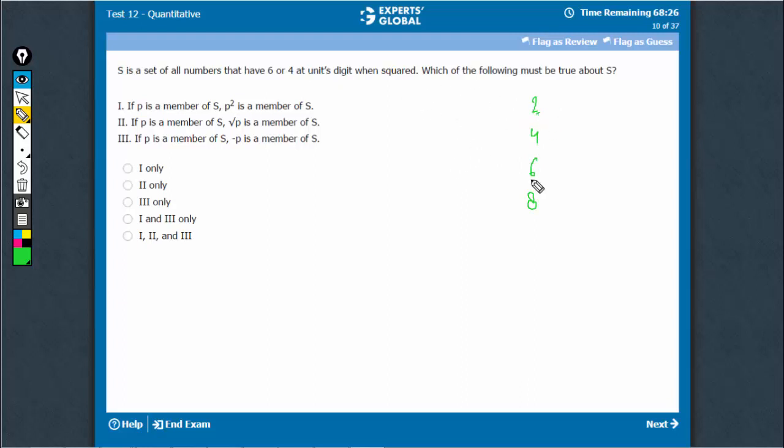So what must be true about such a set? If P is a member of S, P squared is a member of S. That's correct because this is the original number that is a part of the set. So its square would end with 4, its square would end with 6, its square would end with 6, and its square would also end with 4. So these numbers themselves would also be a part of this group, right?